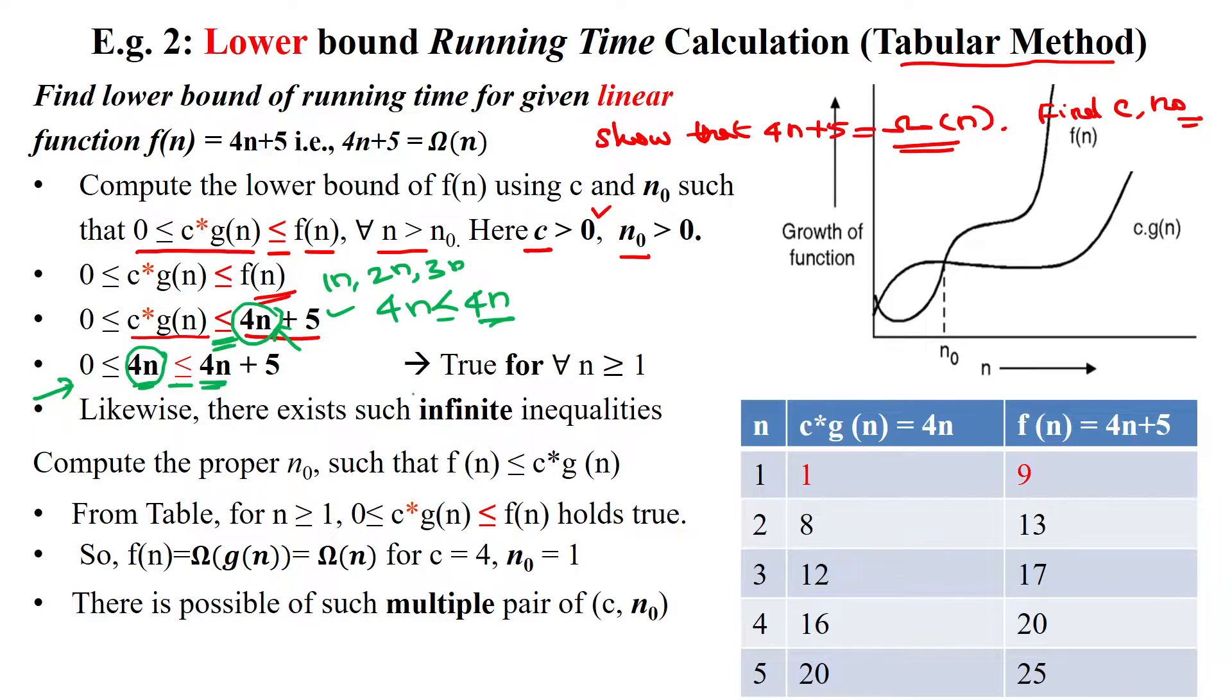Now we will make the table: c times g(n) equals 4n, and f(n) equals 4n plus 5. We will substitute the value in place of n. For n equal to 1, 4n will become 4.